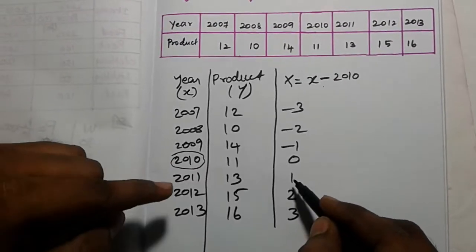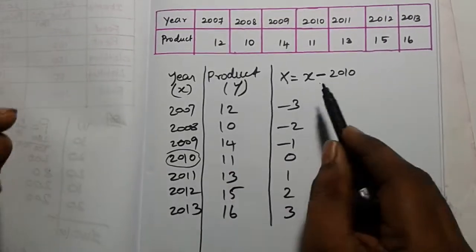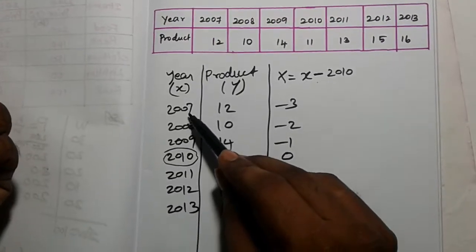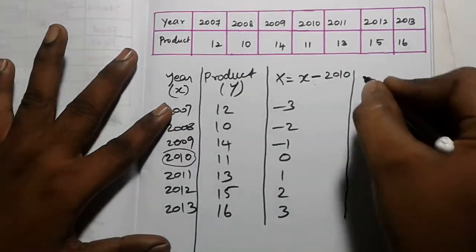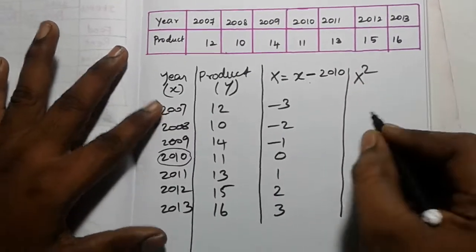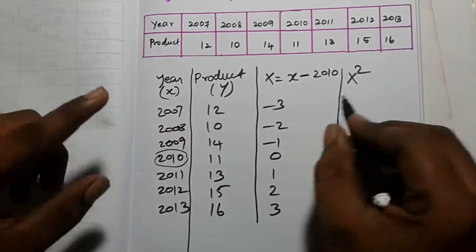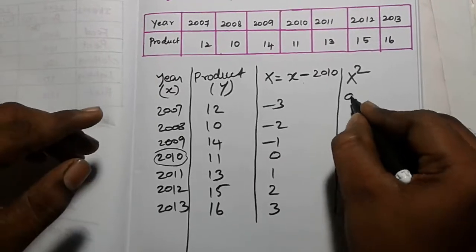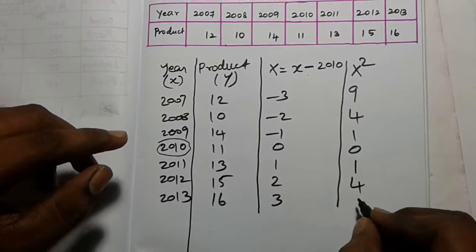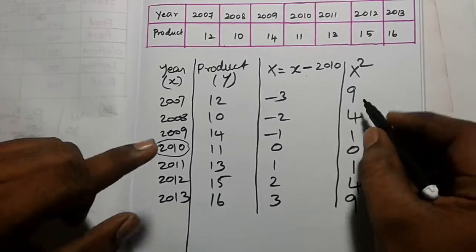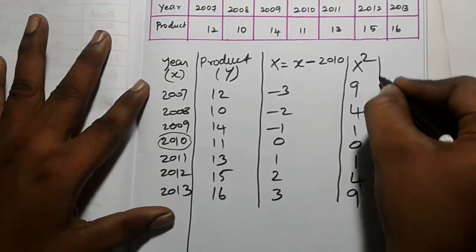Going down from the middle: positive 1, 2, 3. Going up from the middle: negative — minus 1, minus 2, minus 3. You can substitute 1 by 1. Now, capital X square: minus 3 squared is 9, minus 2 squared is 4, minus 1 squared is 1, 0 squared is 0, 1 squared is 1, 2 squared is 4, 3 squared is 9. Note: in the minus values, the square is still positive.